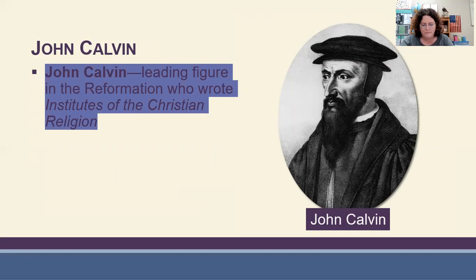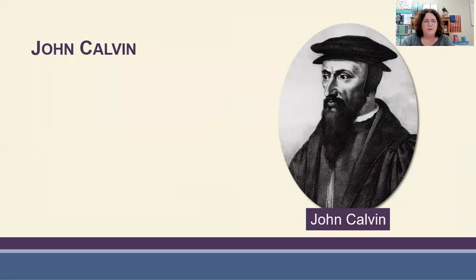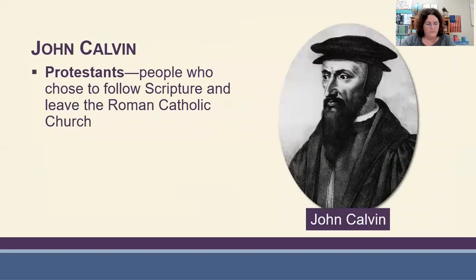John Calvin was born in France and was a leading figure of the Reformation. He ministered from Geneva, Switzerland, due to the hostility of the French government towards Protestants. He wrote a book called Institutes of the Christian Religion, and a major part of his teaching was predestination — the doctrine of God deciding one's destiny before birth.